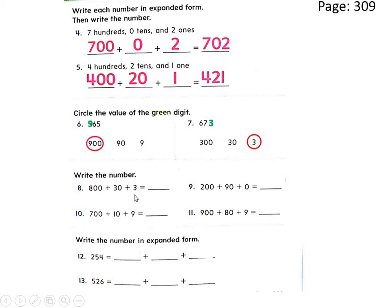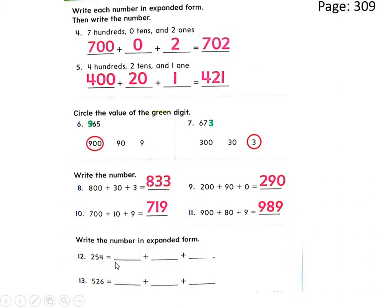Eight hundred plus thirty plus three is the expanded form. How can we write this number? Simply, it's eight hundred thirty-three. Now it's your turn, Grade Two — try to solve questions nine through twelve by yourself, and when you finish you can check your answers.